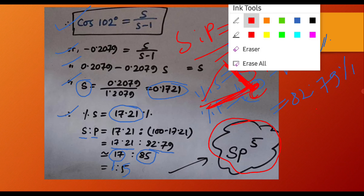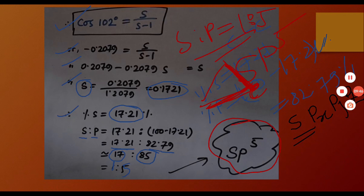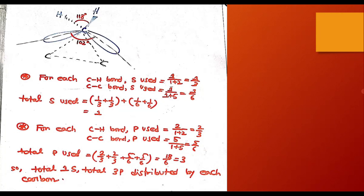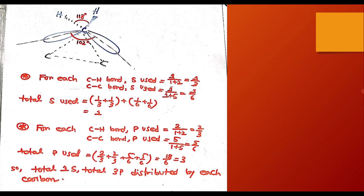But is sp5 hybridization actually possible? For sp3 we use one s, one px, one py, and one pz orbital. For sp5, what orbitals are getting involved? That's a big question. Let's try to find the answer by looking at just one carbon atom carefully.